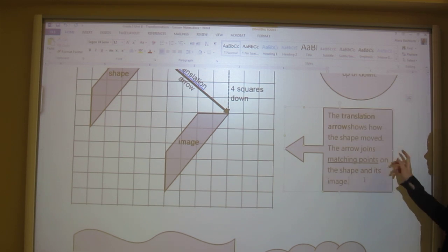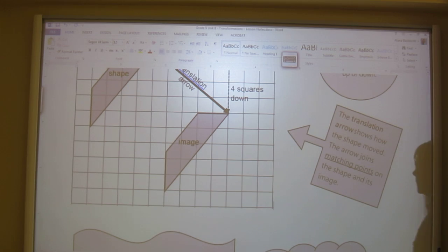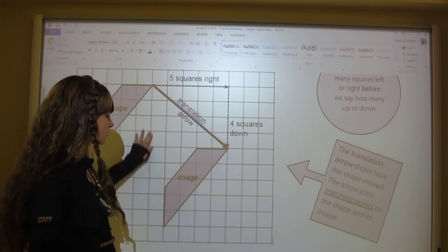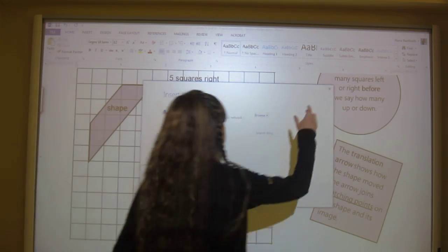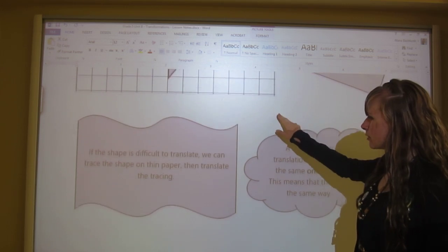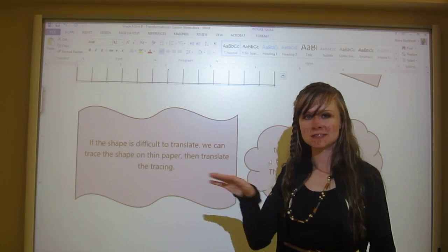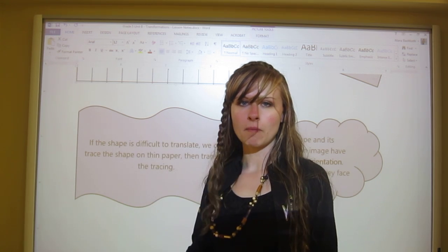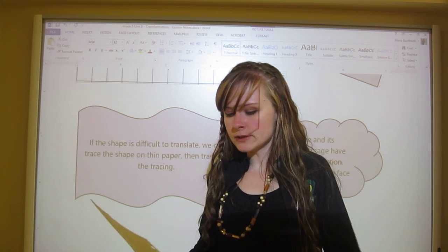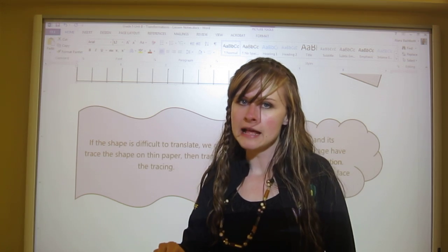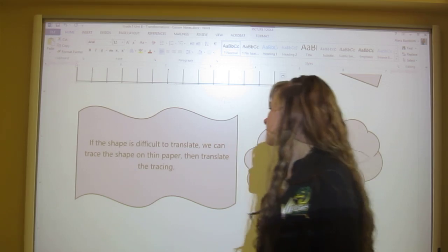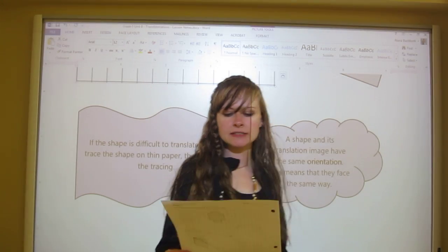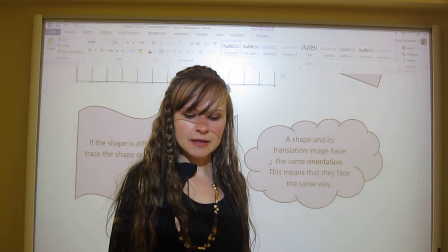The translation arrow shows how the shape moved. The arrow joins matching points on the same shape and its image. If the shape is difficult to translate, if it's like an awkward shape, then you might want to trace the shape onto a thinner piece of paper and then translate that tracing. A shape and its translation image have the same orientation, and that means they face the same direction.